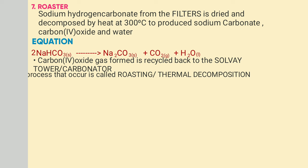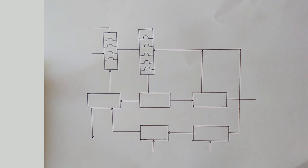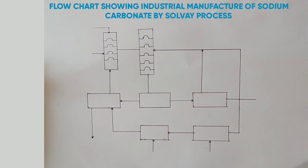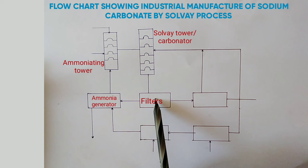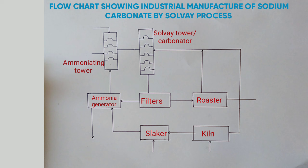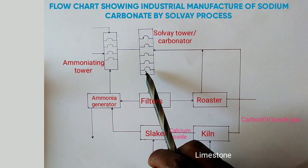The diagram below shows the industrial manufacture of sodium carbonate by the Solvay process. The parts include filters, carbonator, ammoniation tower, slaker, roaster, and ammonia generator. Limestone enters the kiln where it is decomposed to form calcium oxide, which is pumped to the slaker, and carbon dioxide, which is pumped to the carbonator of the Solvay tower. In the slaker, water comes in and reacts with calcium oxide from the kiln to form calcium hydroxide, which is pumped to the ammonia generator.